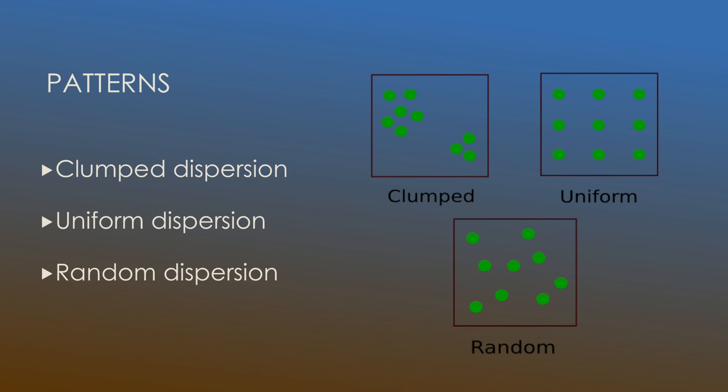So our three different patterns include clump dispersion, uniform dispersion, and random dispersion. We're going to go through each one and look at examples of each.